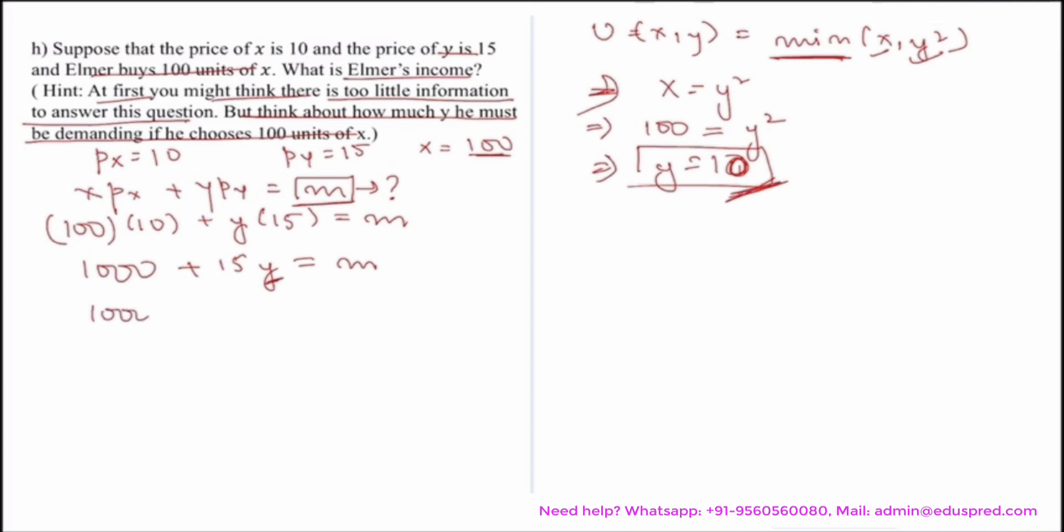1000 plus 15 multiplied by 10 is equal to m. That would be 1000 plus 150 is equal to m. So you have your income as 1150.